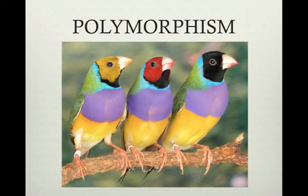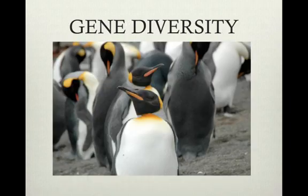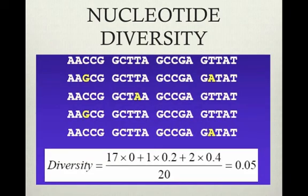Polymorphism is when a population has two or more alleles of a given gene. If the members of a population have two or more forms, polymorphism exists — for example, human eye color. Gene diversity refers to the average percentage of heterozygotes in a population. Nucleotide diversity is the percentage of different nucleotides between individuals in a population.